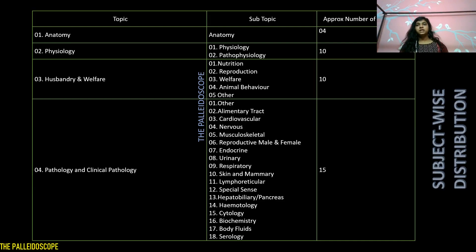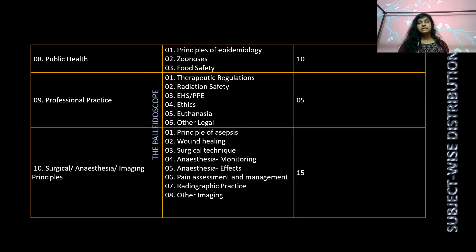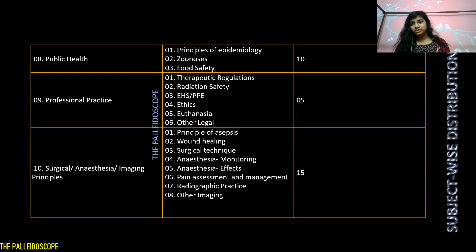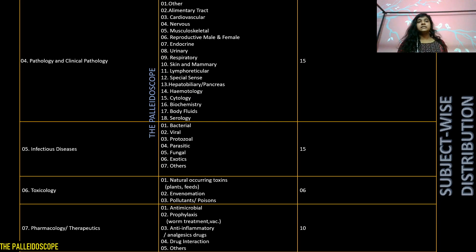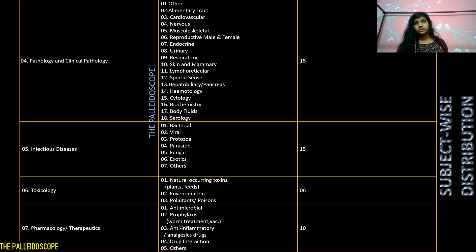The second paper contains 100 questions testing your clinical reasoning skill. Subject-wise, the maximum number of questions come from pathology and clinical pathology, infectious diseases, surgical anesthesia, and imaging principles. Apart from that, public health is another important area, followed by pharmacology and therapeutics, and physiology, husbandry, and welfare.